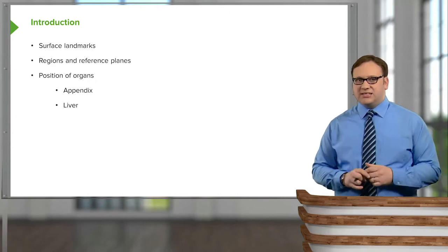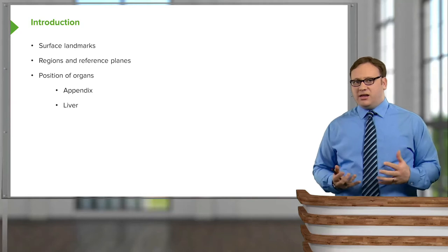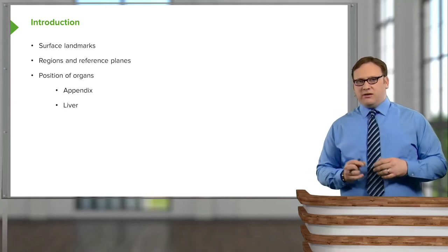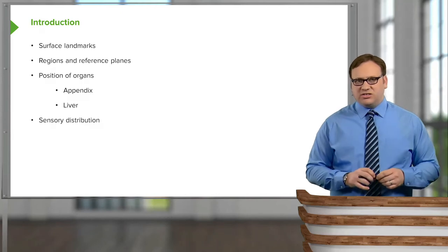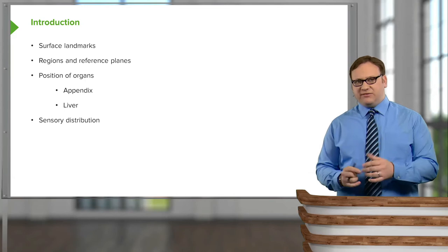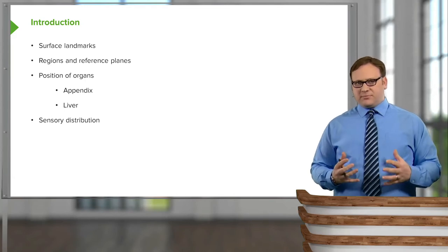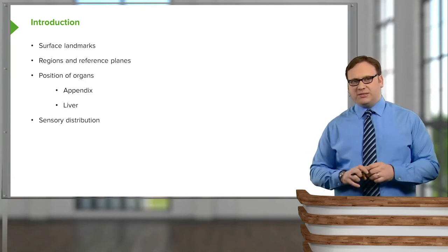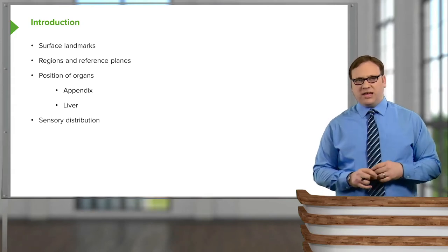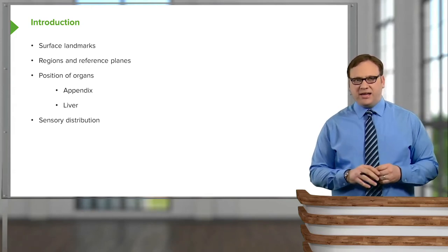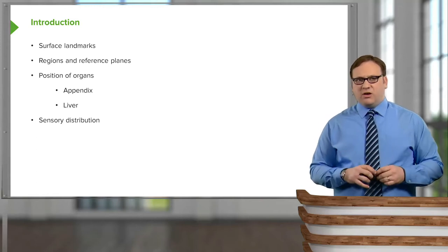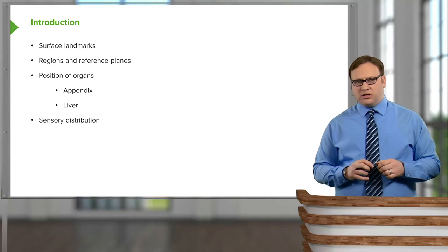We'll look at where the appendix is located and where the liver is. And then finally, towards the end of the lecture, we're going to look at the sensory distribution — how the skin of the abdomen receives its sensory innervation and how this passes back to the spinal cord. This is important when looking at the distribution of pain from pathologies within the abdomen and the viscera of the abdominal organs.